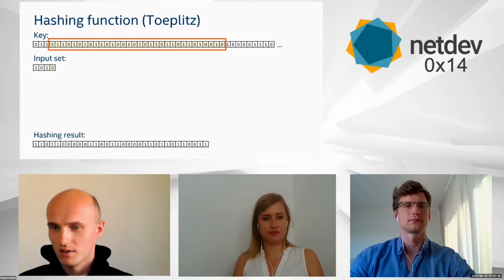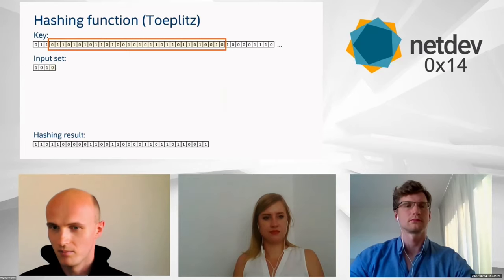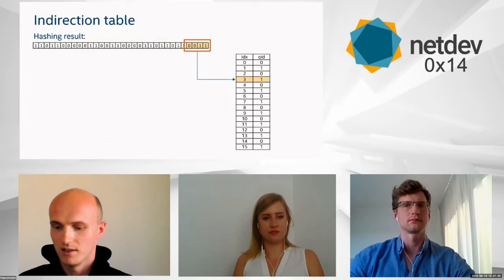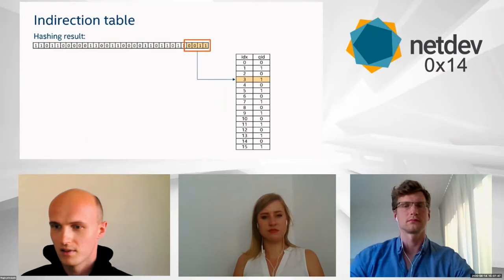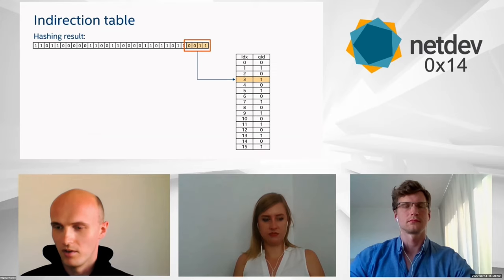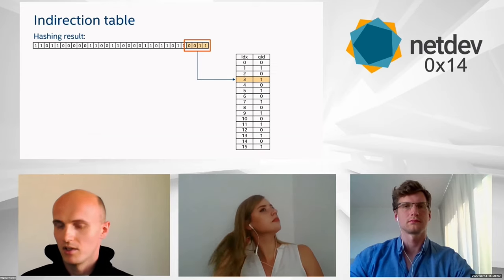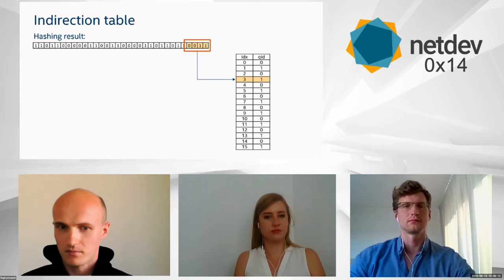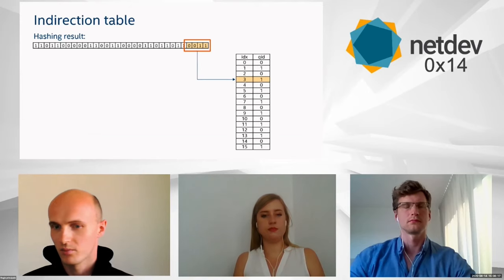As a last step, we move the mask forward but the input bit is zero, so we skip the XOR operation, and we get the final hashing result. This result is then run over the indirection table — a simple four-bit table in this example. We use the four least significant bits of the hash value to select the index in the indirection table, determining which queue receives the packet.